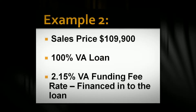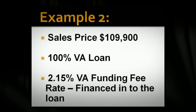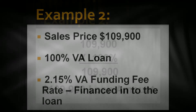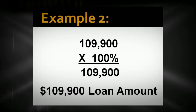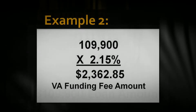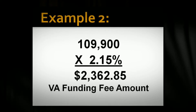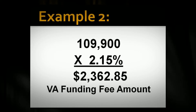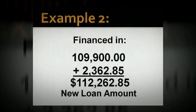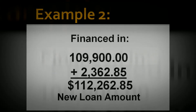Example two: you have a sales price of $109,900 at a 100% VA loan. The VA funding fee is 2.15% and it will be financed into the loan. You take $109,900 times 100% loan to value, giving you a loan amount of $109,900. Then you multiply $109,900 times 2.15%, which gives you a VA funding fee amount of $2,362.85. You add that to the loan amount of $109,900, giving you a new loan amount of $112,262.85.